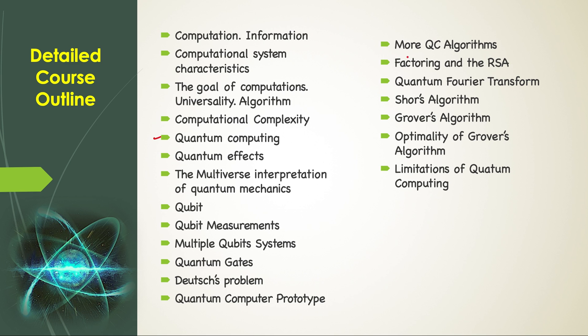Then we will see some more quantum computing algorithms. Then factoring and the RSA, quantum Fourier transform, Shor's algorithm, Grover's algorithm, optimality of Grover's algorithm—is Grover's algorithm optimal or can we do better. Then we will explore some of the limitations of quantum computing.